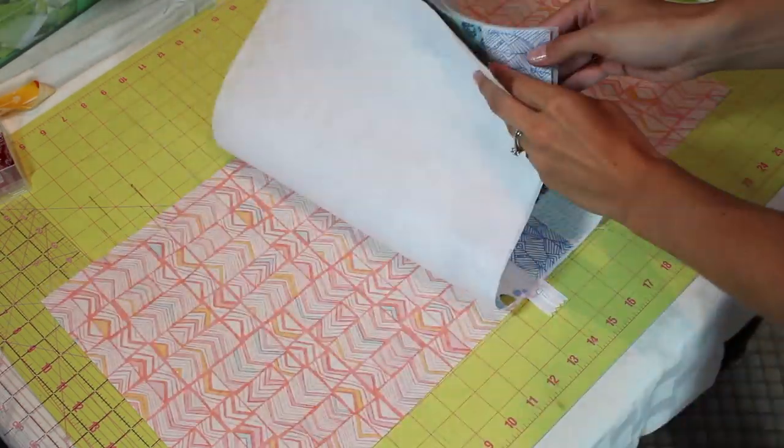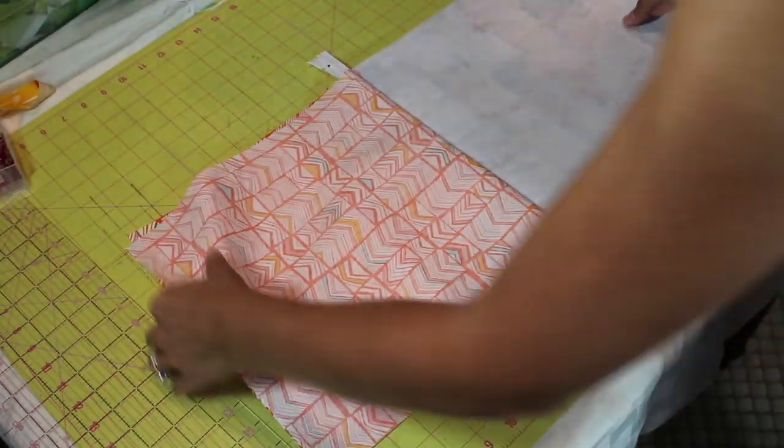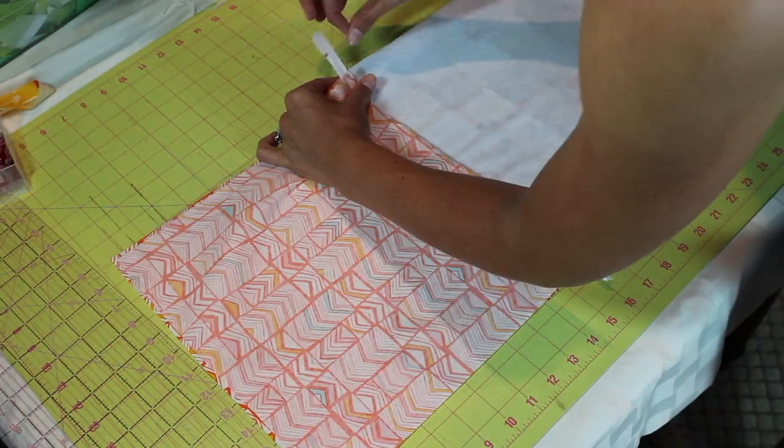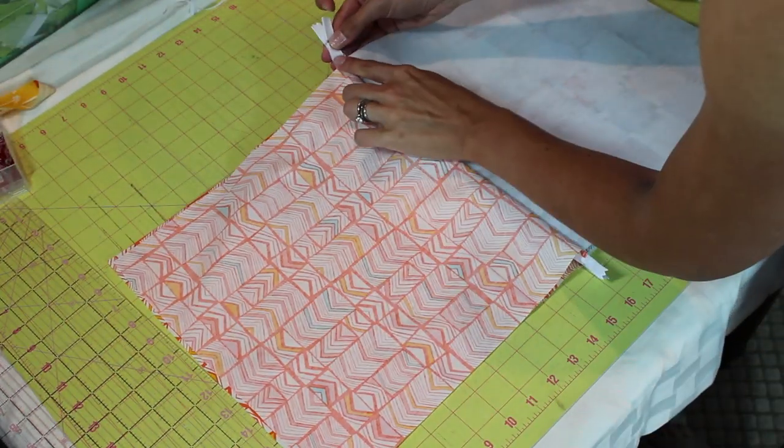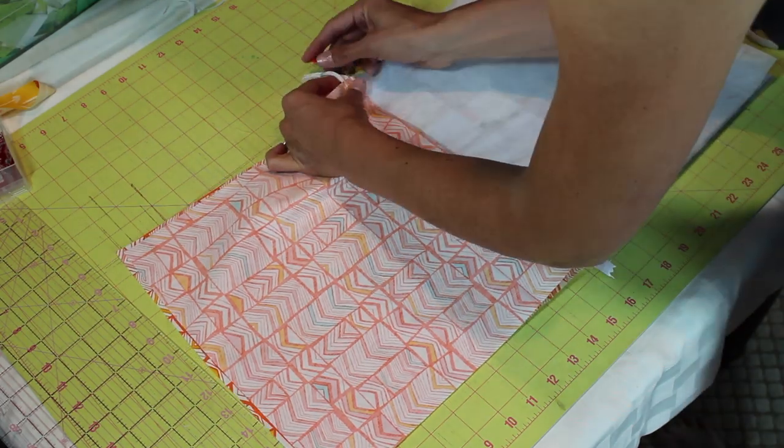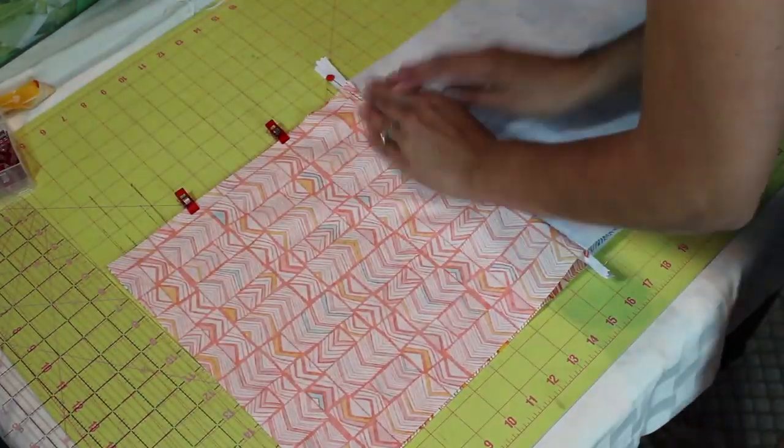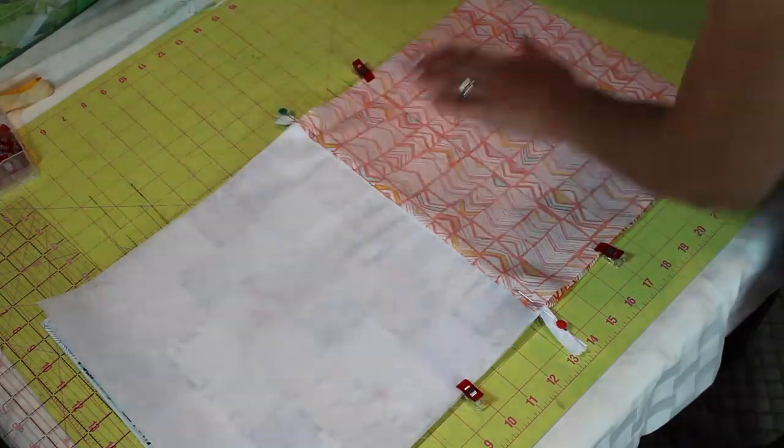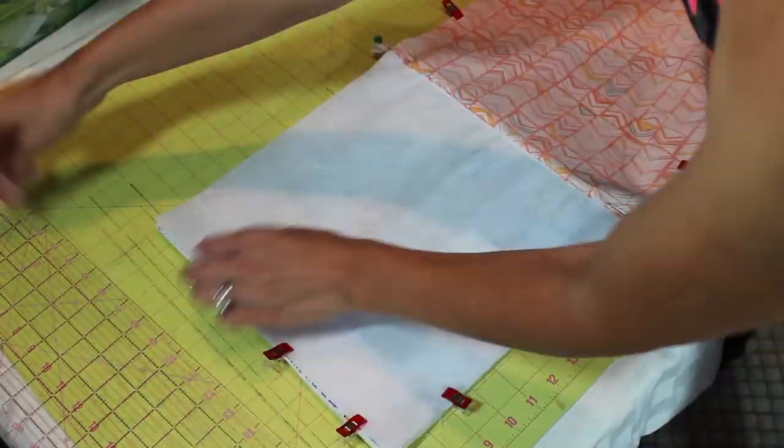The next thing we're going to do is open up that zipper about three quarters of the way down. And we're going to place our patchwork sides right sides together, and our lining right sides together. Make sure that the zipper teeth are facing the lining. Then go ahead and pin all the way around.